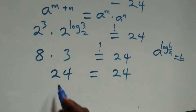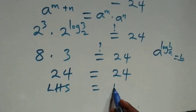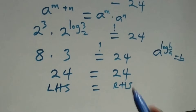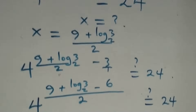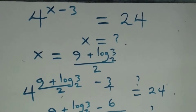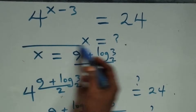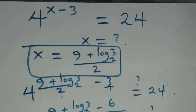Left-hand side equals right-hand side, so we conclude that x equals nine plus log three base two all over two satisfies this given problem. Thank you for watching — don't forget to subscribe for more videos, turn on the notification bell, share, give a thumbs up, and put your comments. See you next class, bye for now.